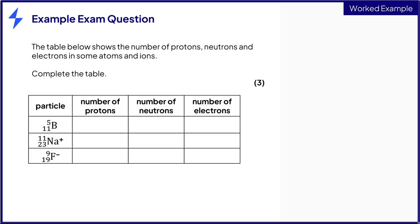To help answer this question, remember the number of protons is the atomic or top number. So boron has five protons, the sodium ion has eleven protons, and the fluoride ion has nine protons.